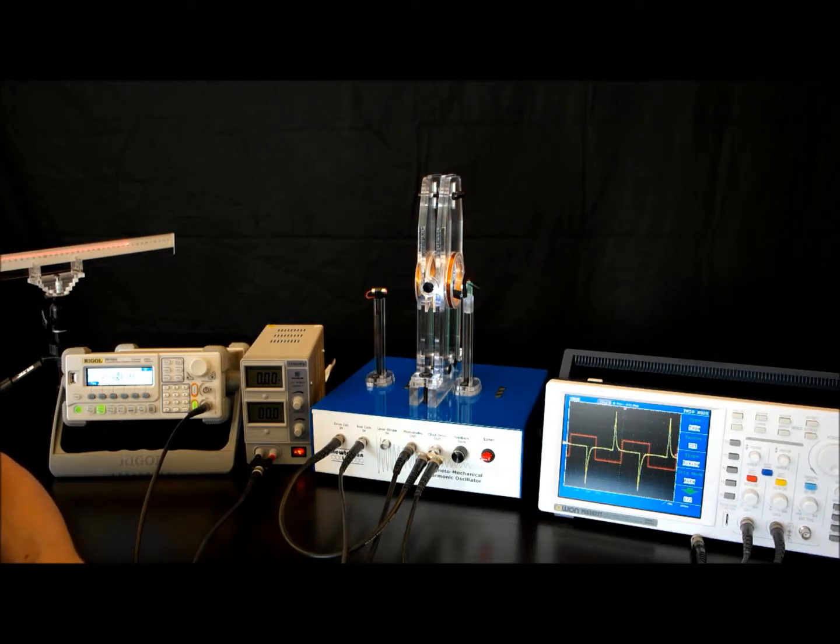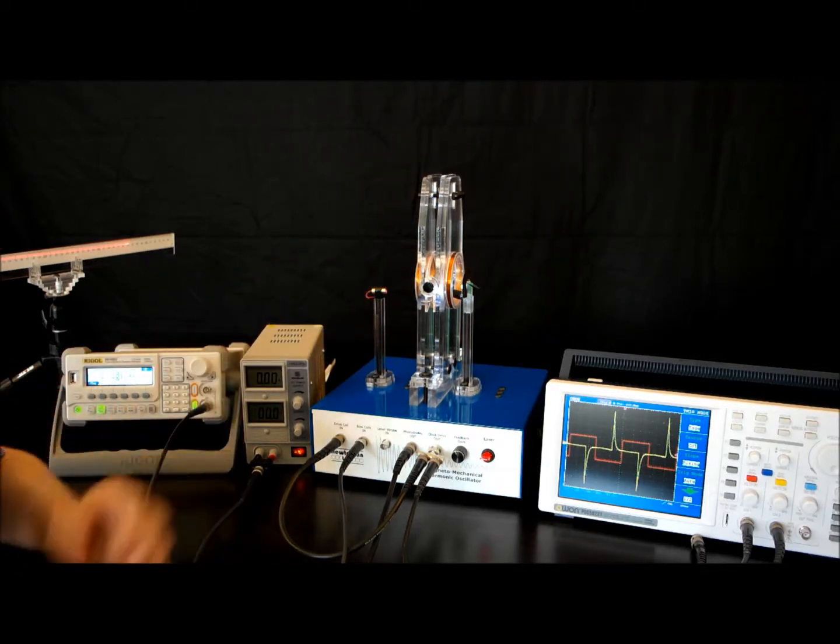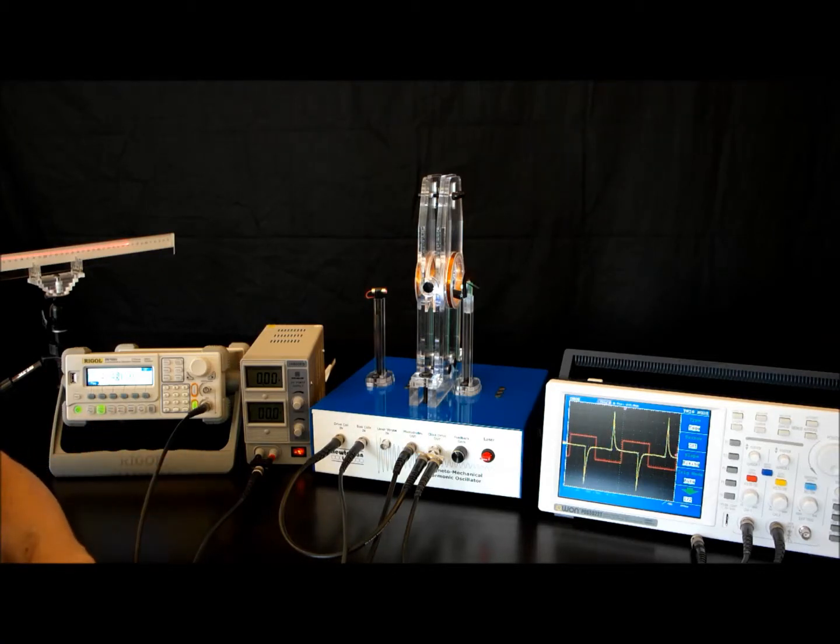Just for fun, I can look at that in terms of Bohr magnetons per atom. Estimate how many atoms are in that thing, and you'll find it's of order one. Which is a good exercise. It tells one a little bit about how permanent magnets work.